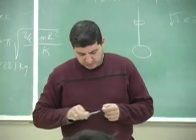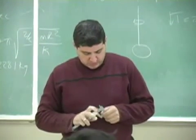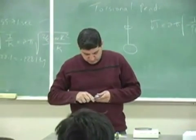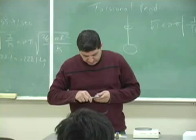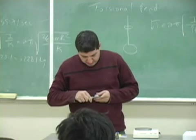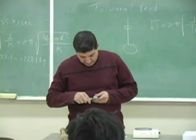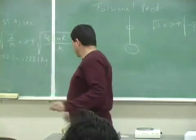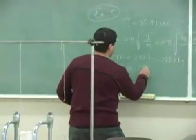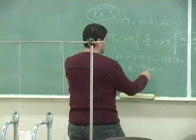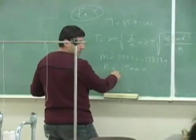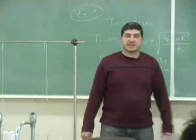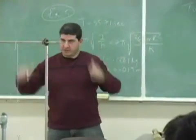We'll use the vernier here. 38 millimeters diameter, which is 19 millimeters radius, right? Which is 0.019 meters. From that, let's calculate the torsional constant of this string.